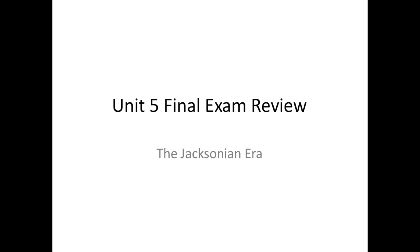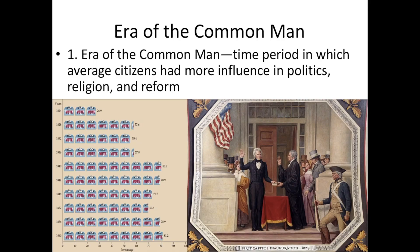We ended the last PowerPoint talking about the election of 1828 — how Andrew Jackson got his revenge after feeling cheated out of the election of 1824. He's elected president and he ushers in the Era of the Common Man, meaning poor and average people, not just the wealthy, gain more influence and political power.